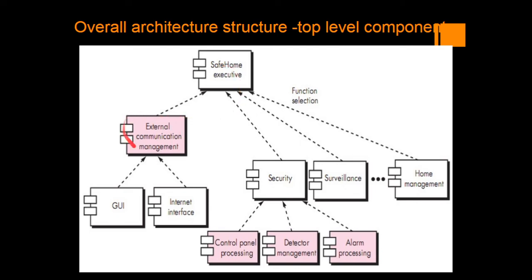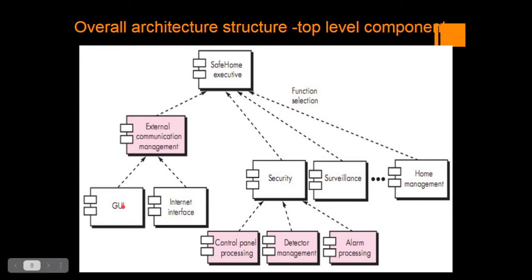Regarding external communication management, the GUI — graphical user interface — as well as the internet interface give information to the external communication management component. This is what is fed in: the data, signal, or image, and how it is communicated to the safe home system. This diagram explains how the architectural structure is expanded into the top-level components.